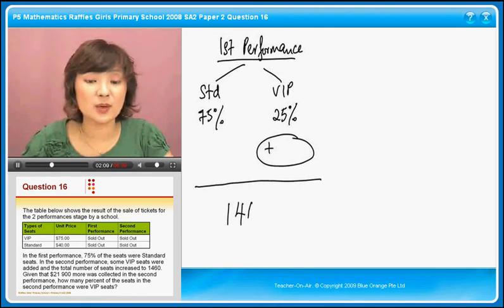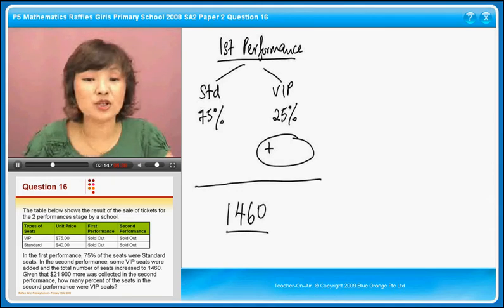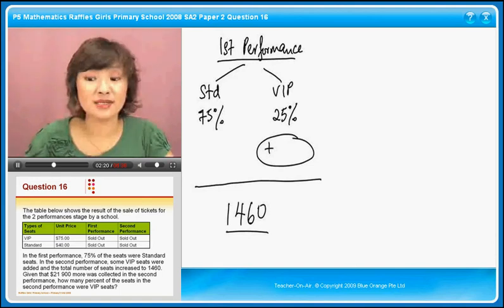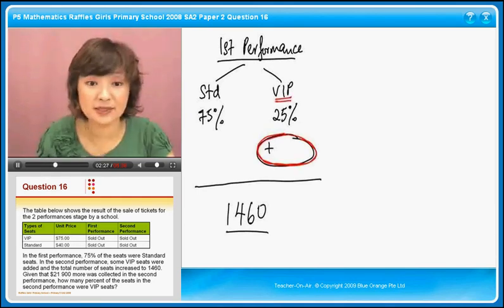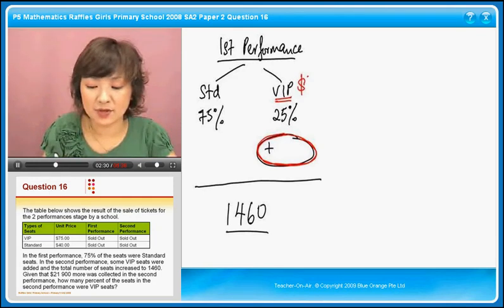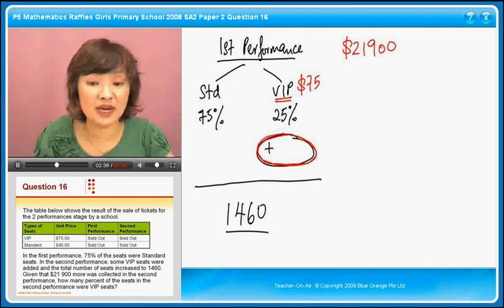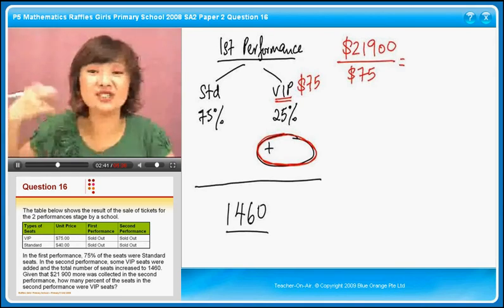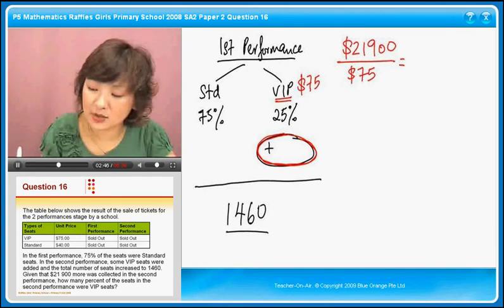They say $21,900 more was collected in the second performance. Why should there be more money? It's because there were more seats set up — those extra seats are the VIP seats, which cost $75 each. So we take 21,900 and divide it by 75. This tells us the additional number of seats put in — the answer is 292 additional seats.